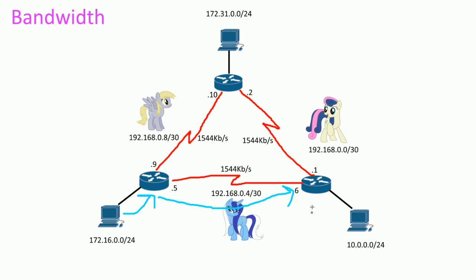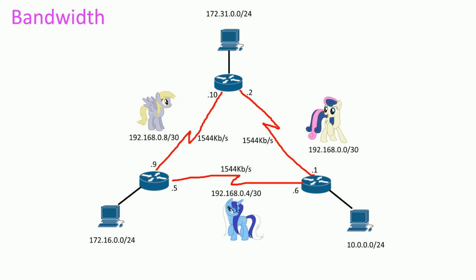It keeps increasing the TTL little by little to find all the intermediary devices on the path to the destination — that's how traceroute works. To recap: the bandwidth is just a name, a label on an interface, and it's used in routing protocols to find the best path to the destination. I hope this was helpful, thank you for watching.